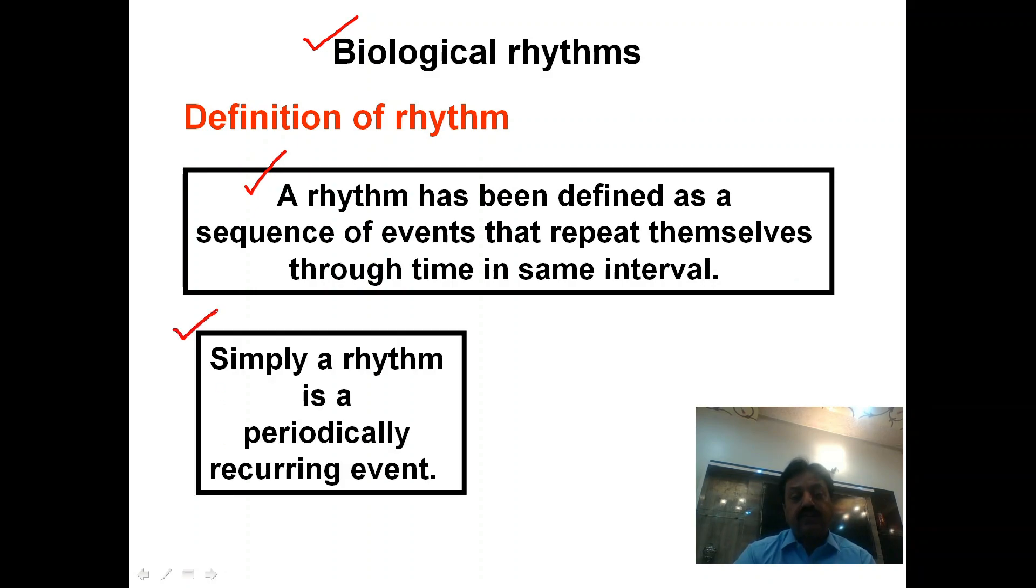This is another simple definition of rhythm. A rhythm is a periodically reoccurring event that repeats at specific intervals. There are many examples of rhythms, including environmental rhythms and biological rhythms.